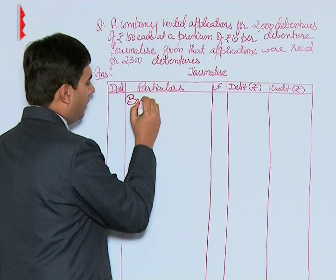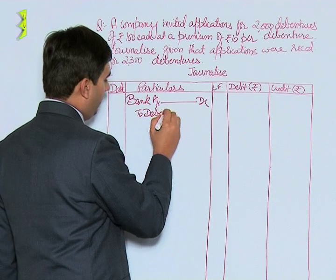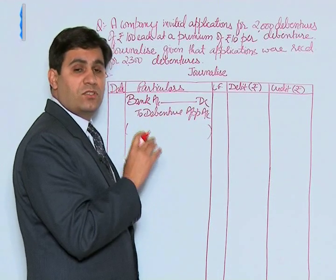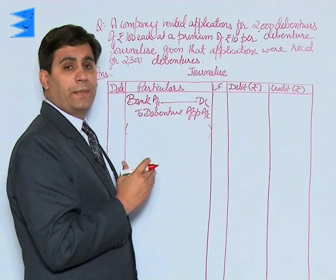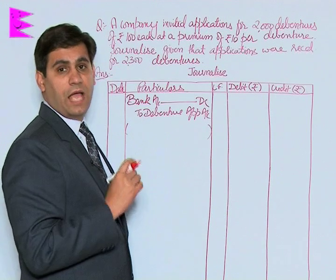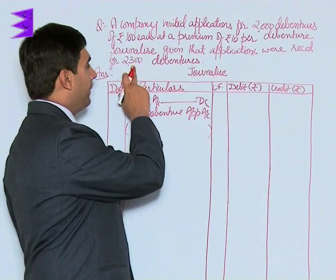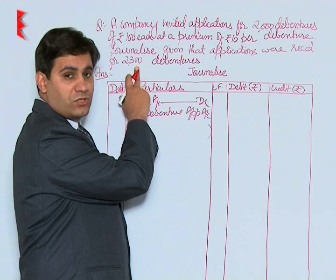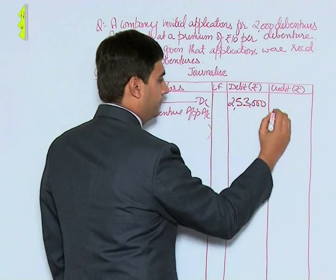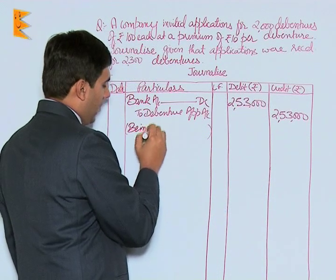Bank account debited to debenture application. In this case, there is no distinction given as to what amount was called on application, allotment, or calls, so it is assumed that the whole amount was payable along with application, including premium. The amount per debenture is rupees 110, multiplied by 2300 applications received, coming to rupees 2,53,000. Narration: being application money received on 2300 debentures.